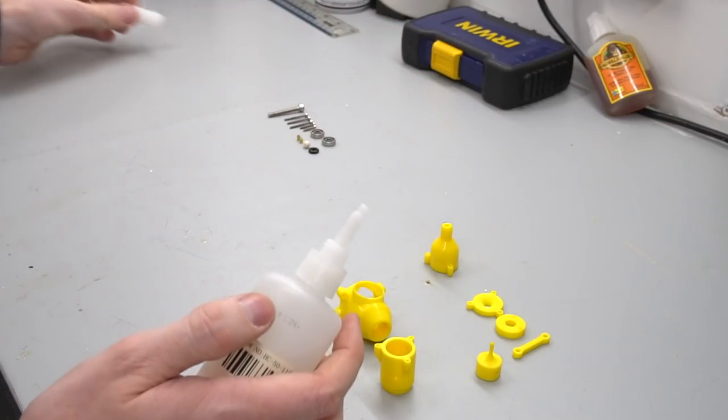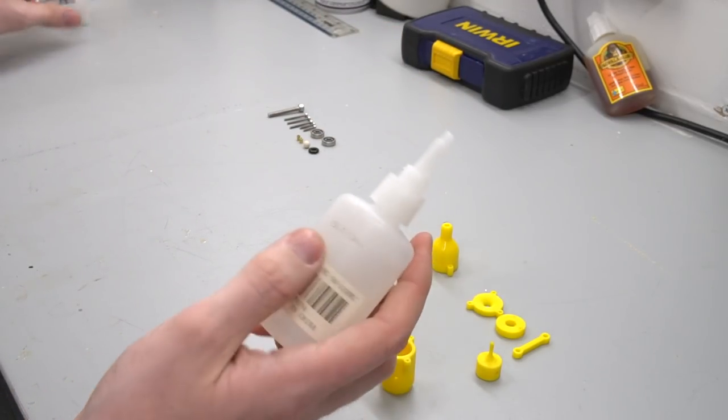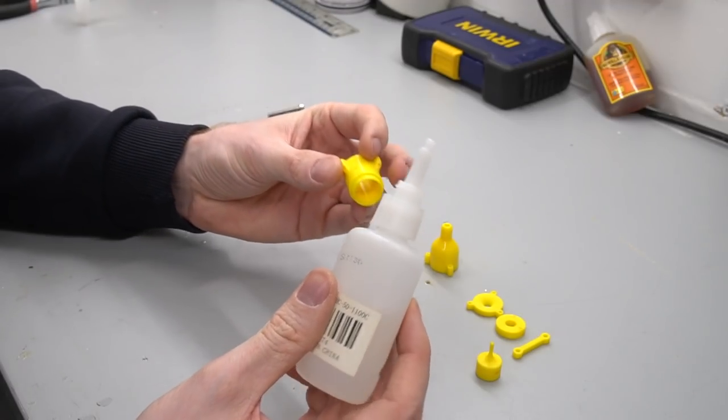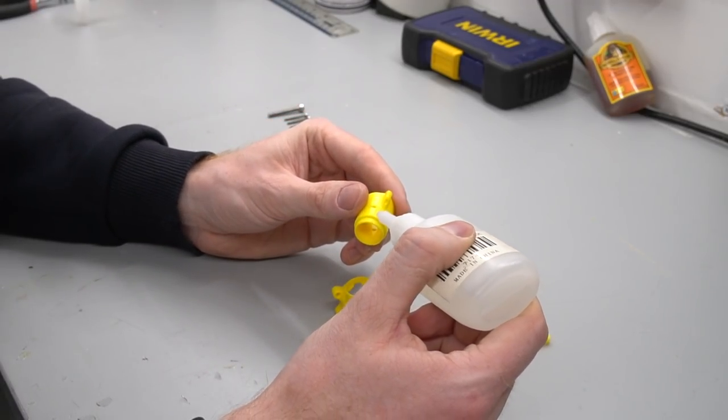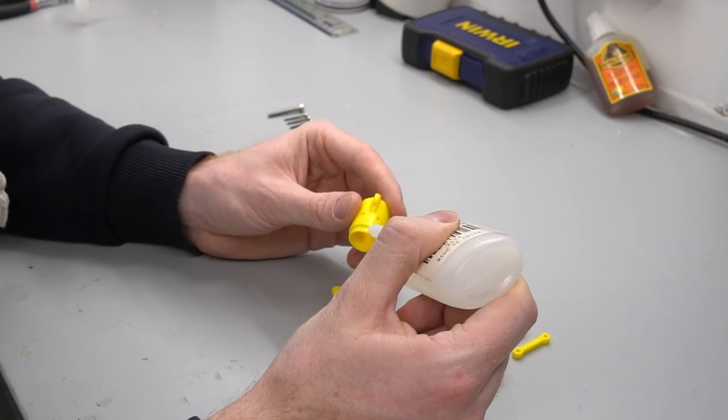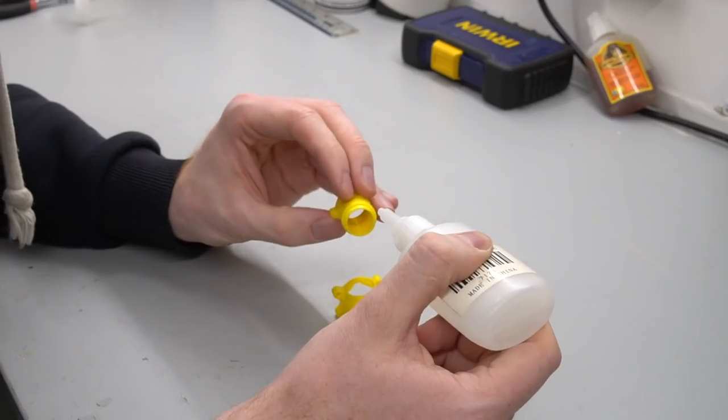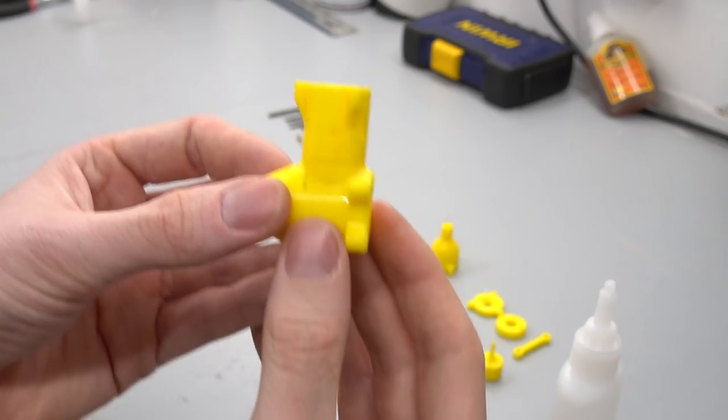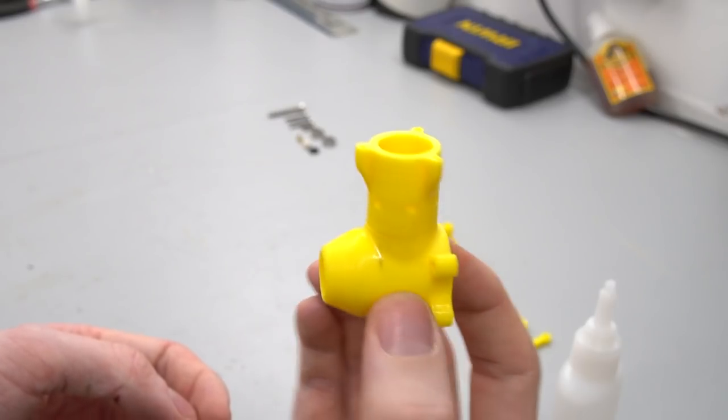I'm just using CA glue. I think this is CA glue. It slightly dissolves the ABS print actually so it should make it quite strong. I know I'll probably get comments saying you should acetone glue this but I have attempted that in the past and it didn't end up very well. For those of you that don't know, CA glue is essentially super glue. Looks pretty good.